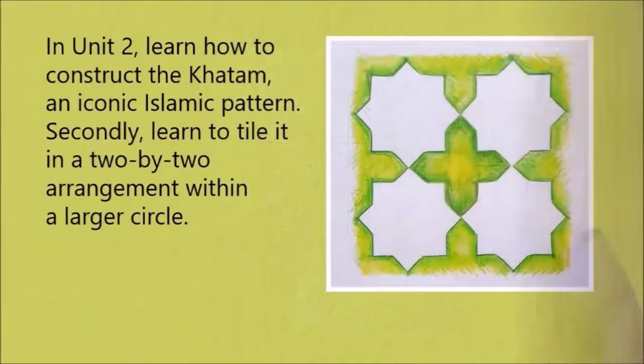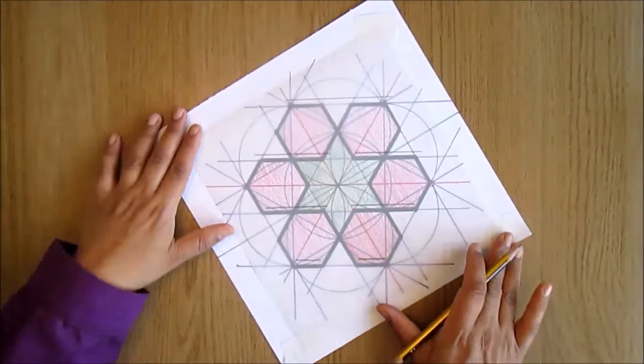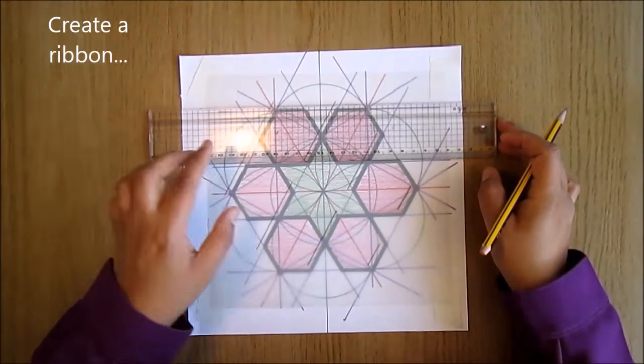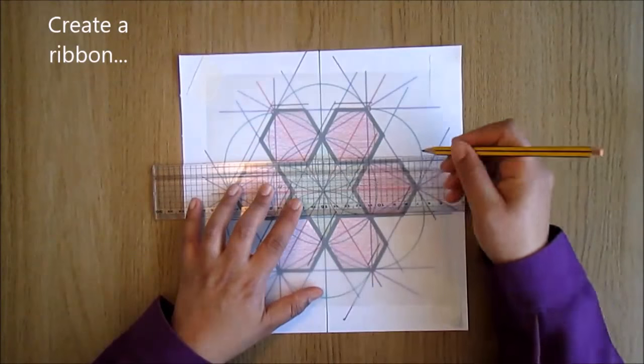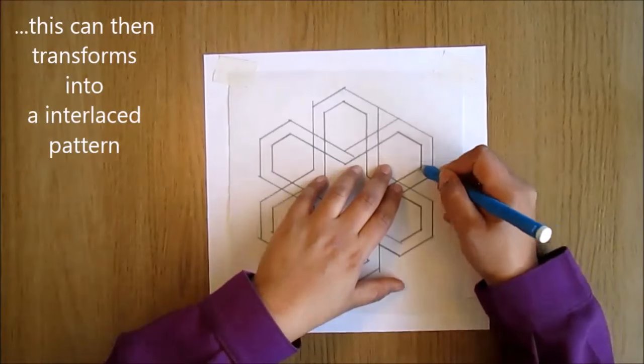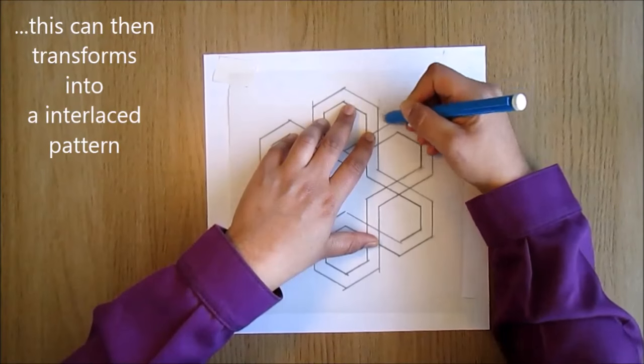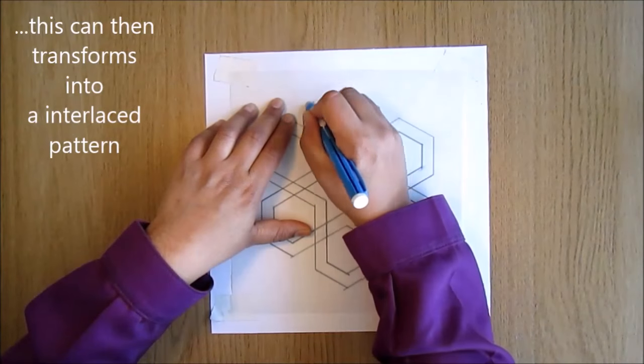In Unit 2, learn how to construct the khatam, an iconic Islamic pattern. Secondly, learn to tile it in a 2x2 arrangement constructed within a larger circle. I'll show you how to create a ribbon systematically and using the symmetry of the pattern very carefully. This can then be transformed into an interlaced pattern, the idea of one ribbon going under or over another.